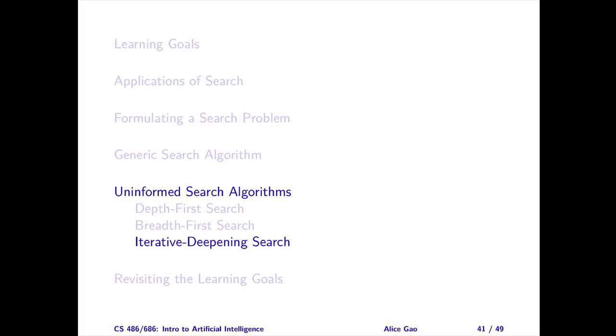After watching this video, you should be able to do the following: explain the motivation for IDS, trace IDS on a search graph, and describe the properties of IDS including space complexity, time complexity, completeness, and optimality. Thank you very much for watching. I will see you in the next video. Bye for now.